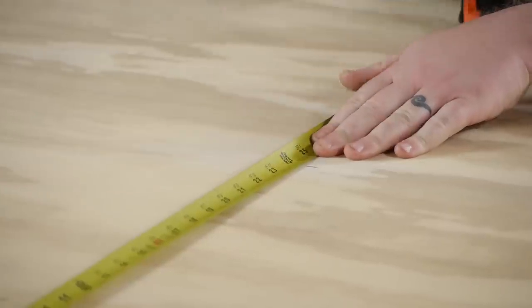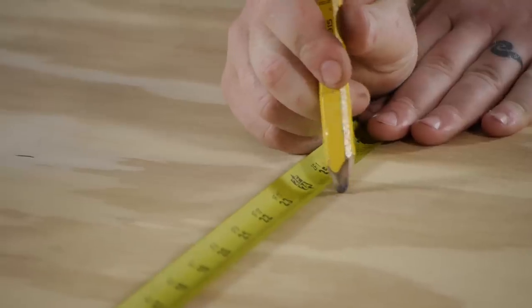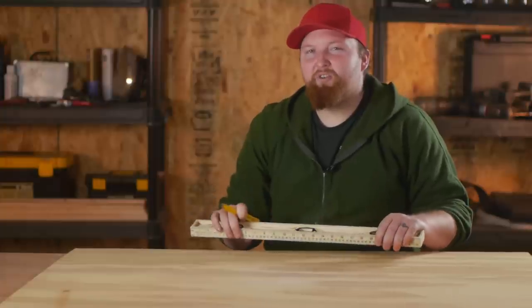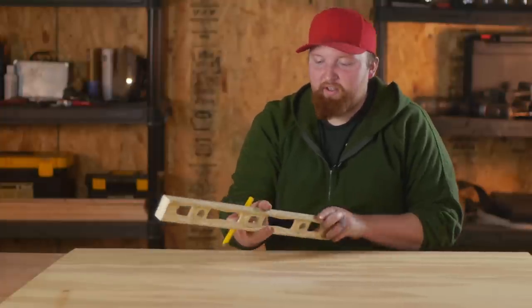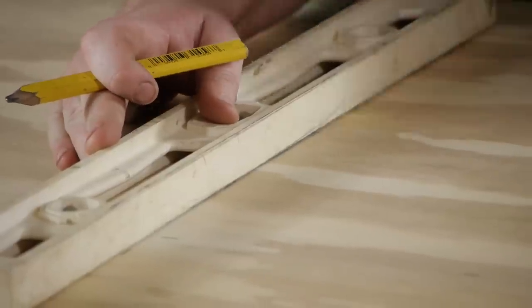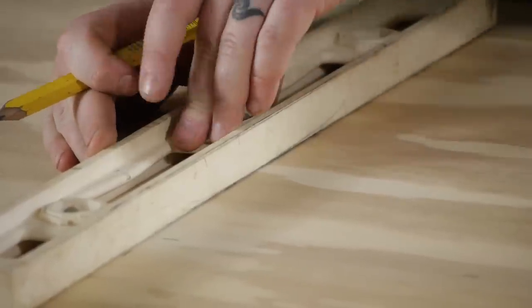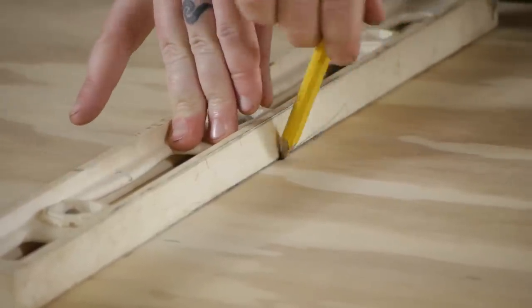Then we'll go ahead and measure the other direction doing the same thing. After you have your lines marked, go ahead and grab your straight line, put it over top of two of the lines, and go ahead and make a straight line between those two.